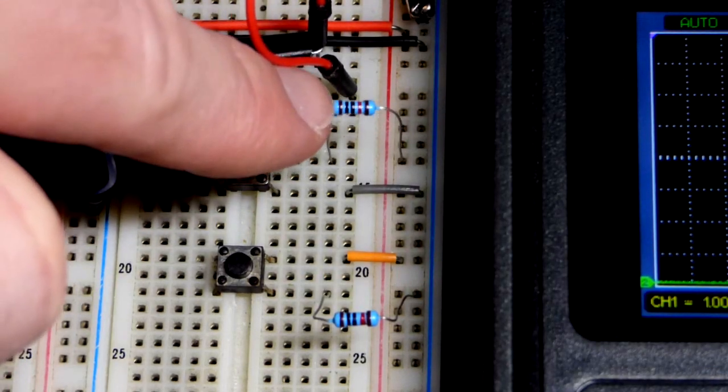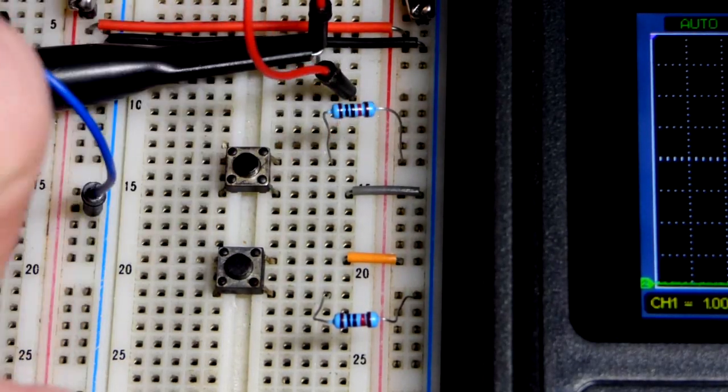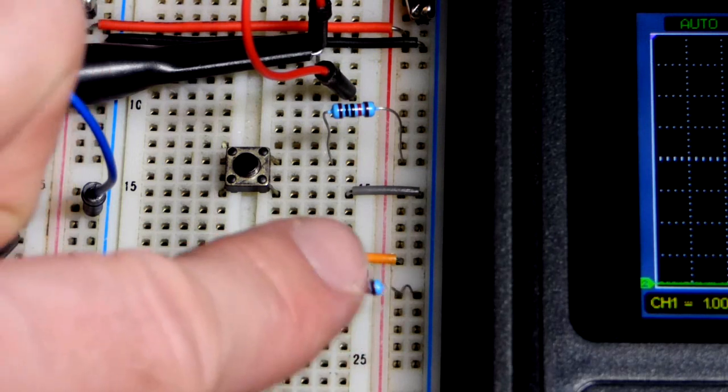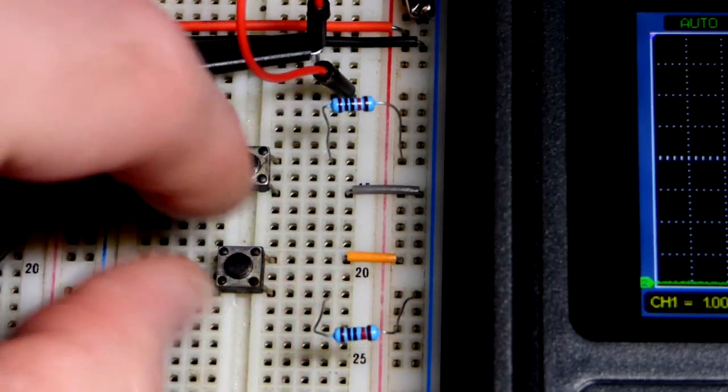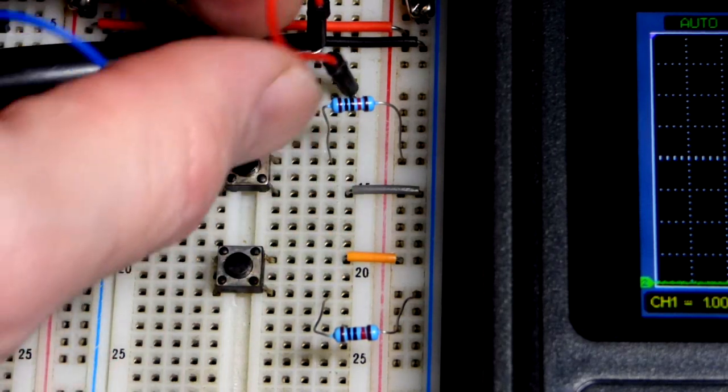In this video we're going to take a quick look at a pull-up resistor and a pull-down resistor. They're both 10,000 ohm resistors. You can see the pull-up goes to the positive supply and the pull-down to the negative supply, and then we've got a switch going to the other supply.